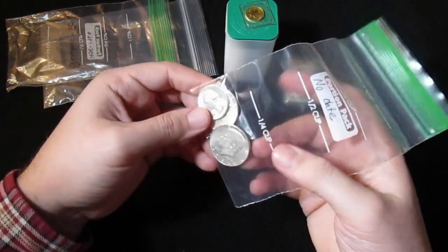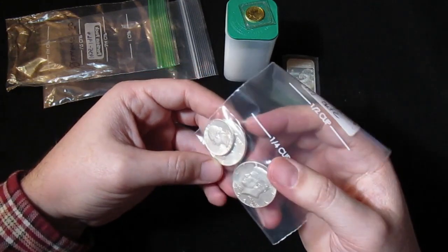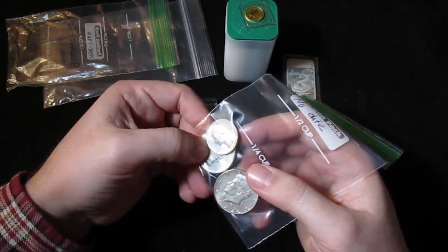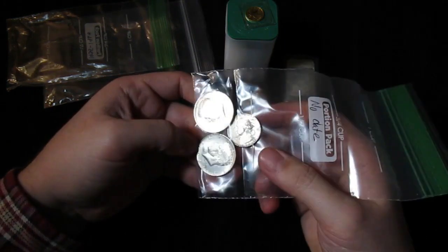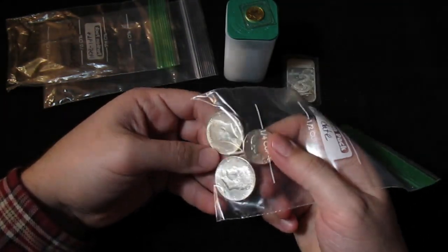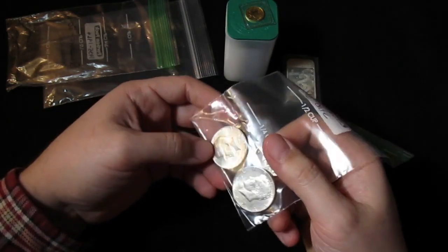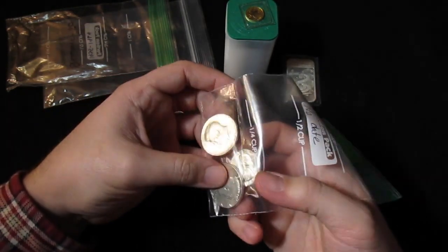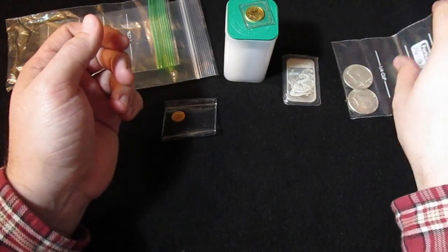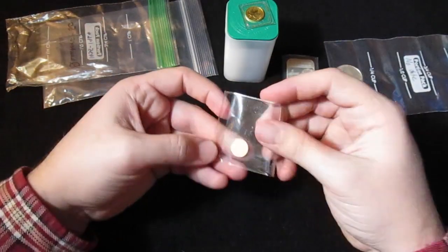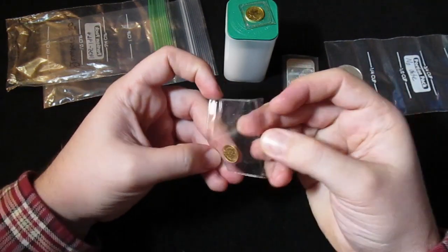And then here we've got, let's see, 1964, 1964. I believe this was a little bit of 90% silver to cover a mistake that was made in a previous order. So we've got here $1.25 face value there. I think that was correct.